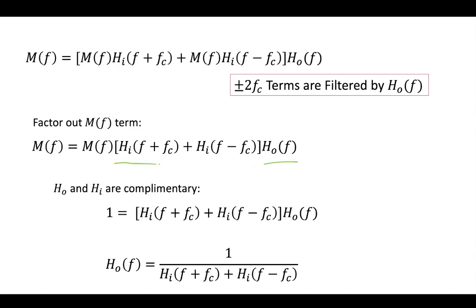must be complementary to this shifted version of the input-band-pass filter, such that they have this relationship where the multiplication of the sum of these shifted inputs multiplied by the output is equal to 1.